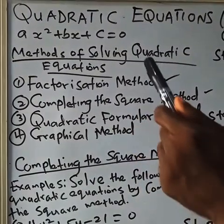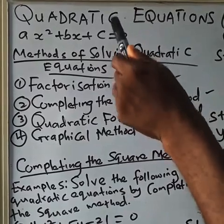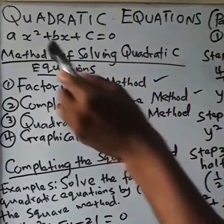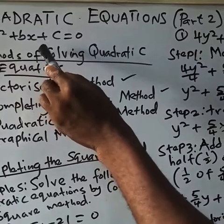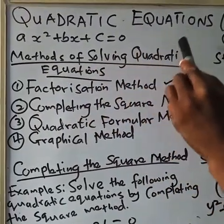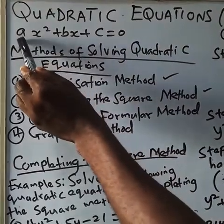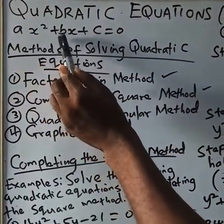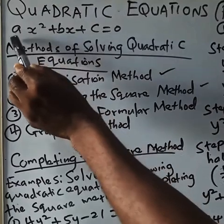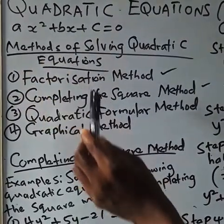Mathematics immunization, that's its platform. Last week we started quadratic equations; this is part 2 for today. We said that ax squared plus bx plus c equals zero is the general form of the quadratic equation, whereby a is the coefficient of x squared, b is the coefficient of x, and c is the constant term. The coefficient means the number in front of the variable or the unknown.